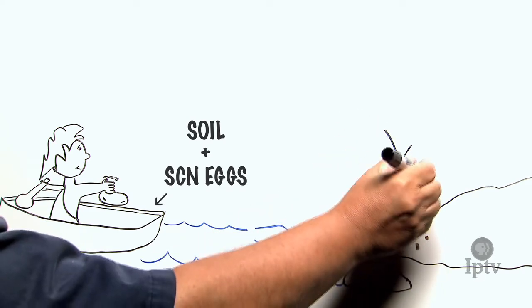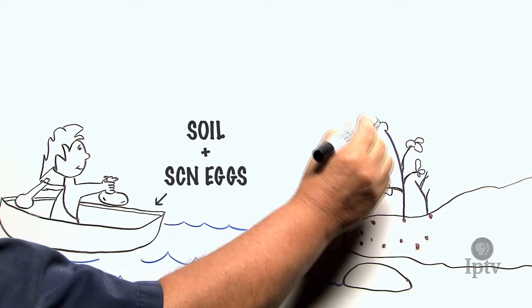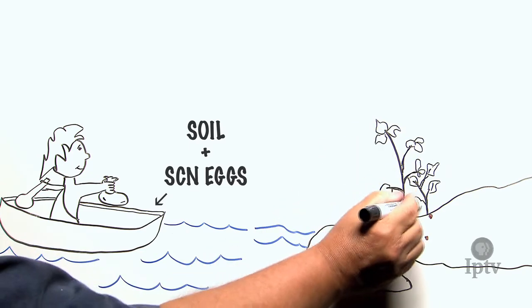It's also possible that humans unknowingly planted their soybeans in soil that already contained the SCN eggs.